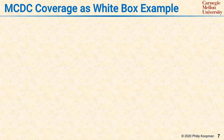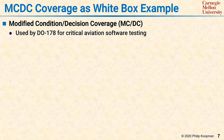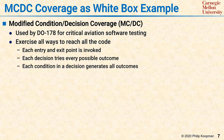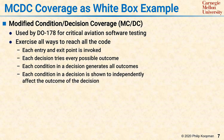An even more sophisticated type of coverage is MCDC coverage for white box testing. MCDC stands for Modified Condition Decision Coverage. It's used by DO-178 for critical aviation software testing and is commonly used for other safety-critical applications where you have to be really sure the code will always work correctly or else somebody could die. MCDC coverage exercises all the ways to reach all the code. The criteria are: every entry and exit point is invoked, every decision tries every possible outcome, each condition in a decision generates all the outcomes, and each condition independently affects the outcome of the decision.